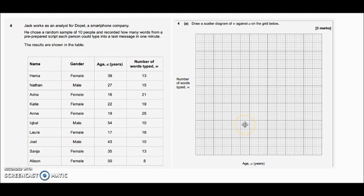Part A is asking us to plot this onto a scatter diagram. This is GCSE content. You need to decide a scale - look at the ages and decide an appropriate scale for the x-axis, then look at the range of words typed and decide an appropriate scale for your y-axis. Pause the video, have a go at plotting that, and when you come back I'll show you the next step.